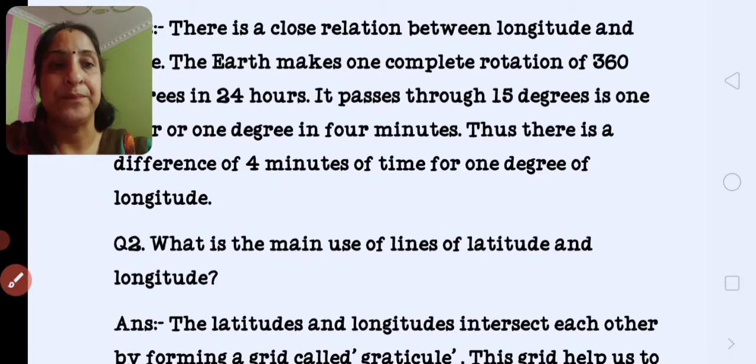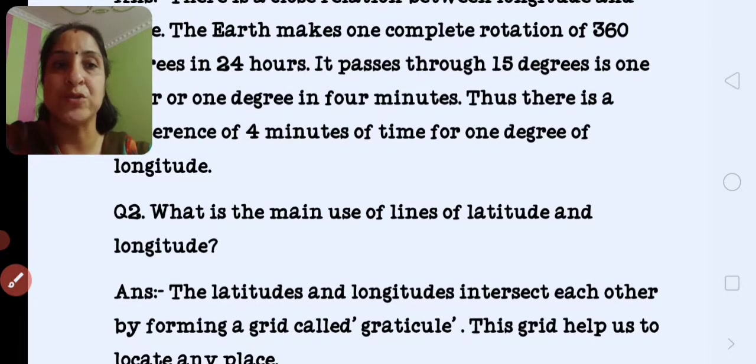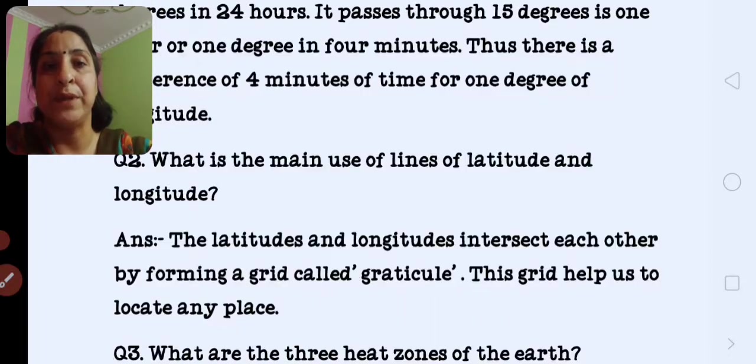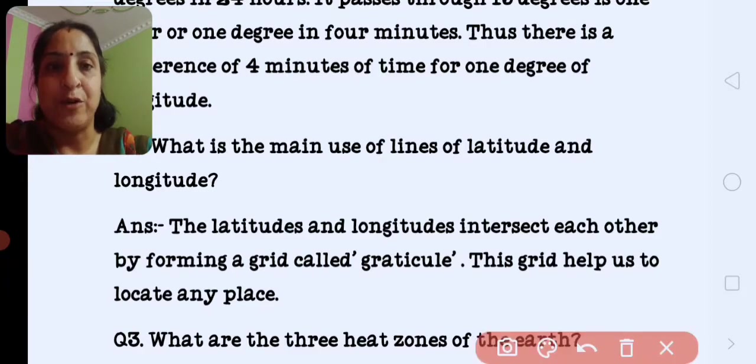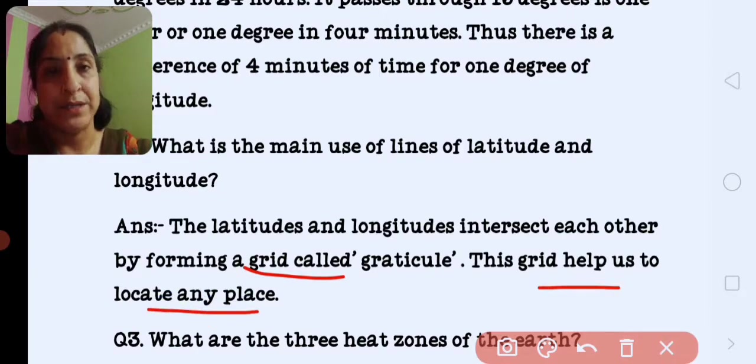Next is what is the main use of lines of longitude and latitude? The longitude and latitude intersect each other forming a grid called graticule. This grid helps us to locate any place.